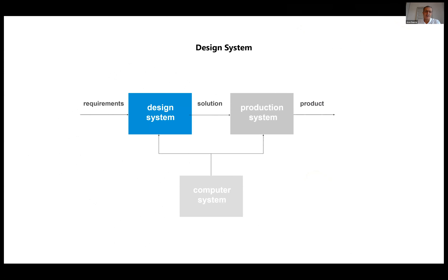To generate designs that match and are sensitive to the context, we need three systems: a design system able to take information about the context and generate a solution; a production system to materialize the solution; and both of these are controlled by a computer system, which uses the high processing power of the computer to link features of the context, the features of the design, and the features of the production system.